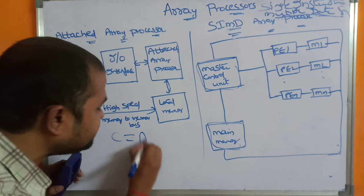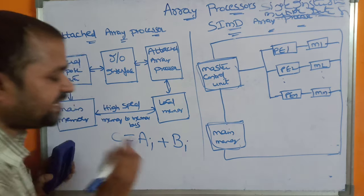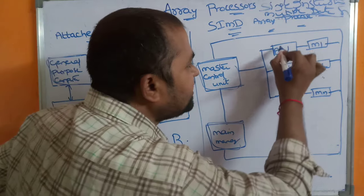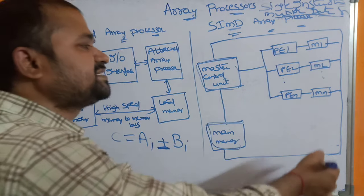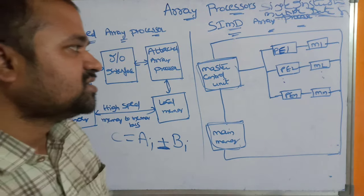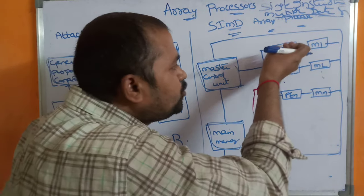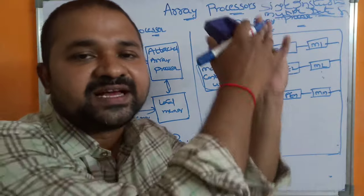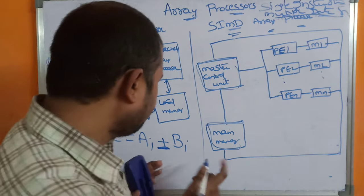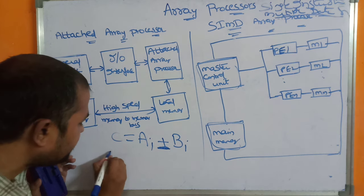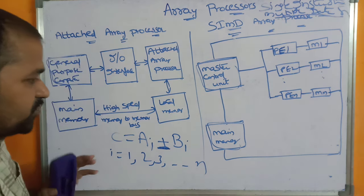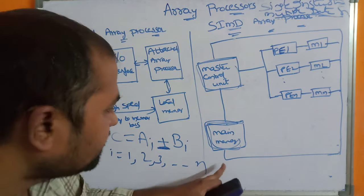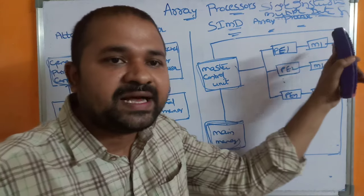The master control unit decodes the instructions and generates control signals based upon the operation. Let us assume that we want to execute an instruction like C = Ai + Bn. It decodes the instruction and determines that the operation needed is addition. That addition operation signal is sent to all the processing elements. The same instruction is sent to all the processing elements, and all of them execute the same instruction simultaneously. The instruction is first stored in the main memory, and from the main memory, the corresponding data is transmitted to the corresponding local memory.